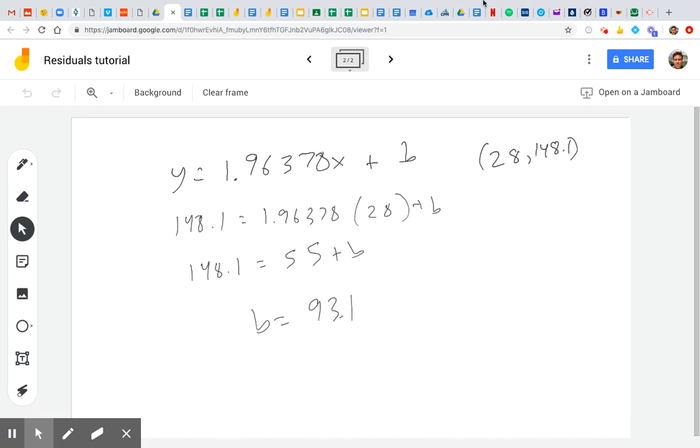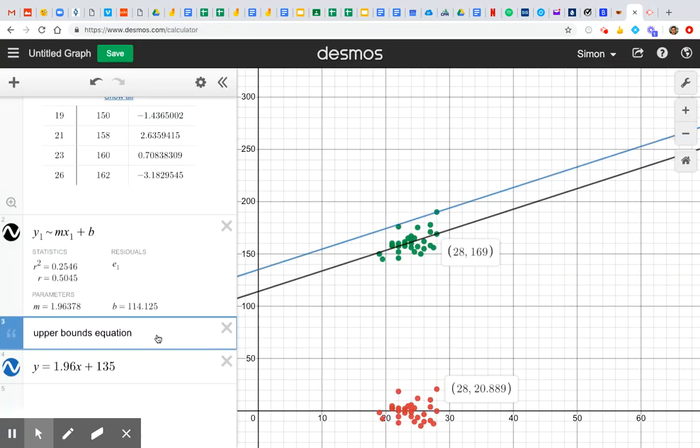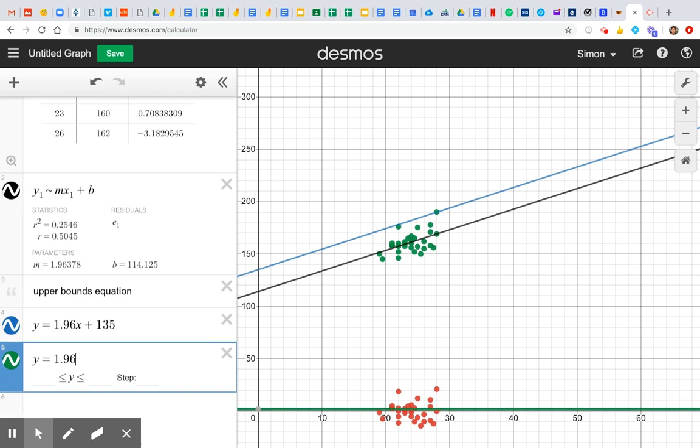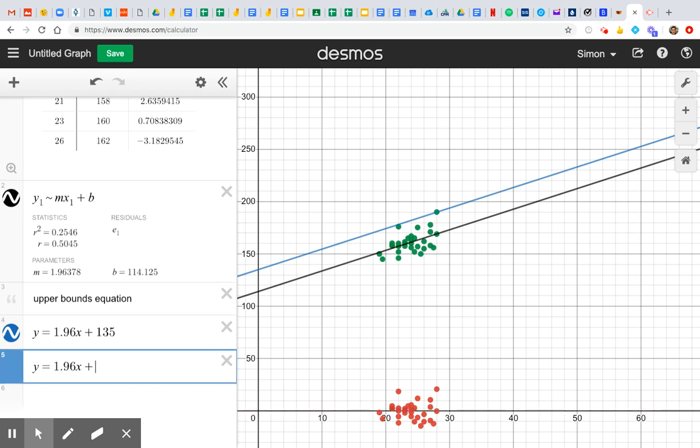So putting that all together, same slope, 1.96x, but the y-intercept was 93.1.